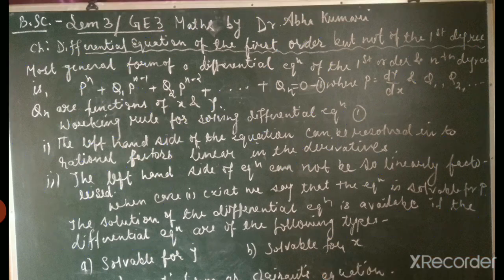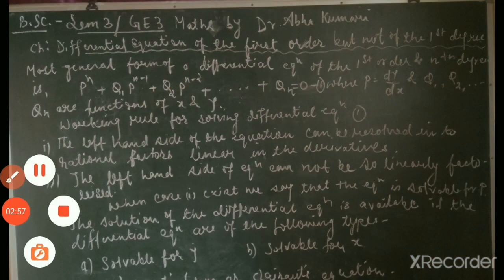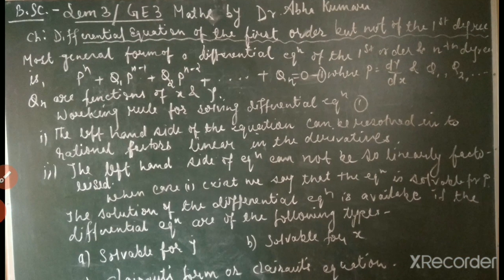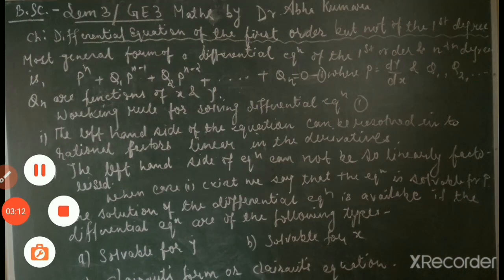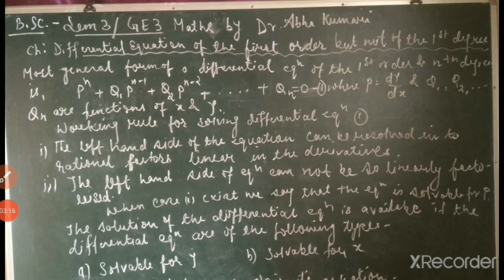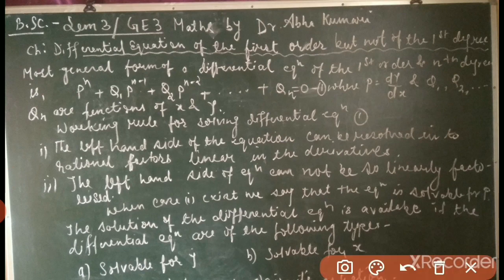The general form is: pⁿ + Q₁·pⁿ⁻¹ + Q₂·pⁿ⁻² + ... + Qₙ = 0, where p = dy/dx and Q₁, Q₂, up to Qₙ are functions of x and y. Let us see the working rule for solving such a differential equation.